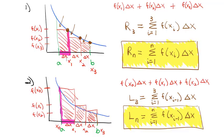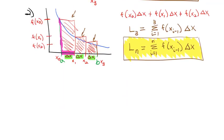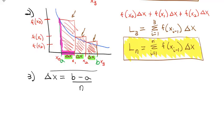One thing I glossed over: how do we find delta x? There's a simple formula — take the high value minus the low value and divide by the number of rectangles you want. So for three rectangles we divide by 3; for ten we divide by 10. The smaller delta x is, the more accurate the estimate, because we reduce those missing spaces. This delta x formula will become almost second nature.